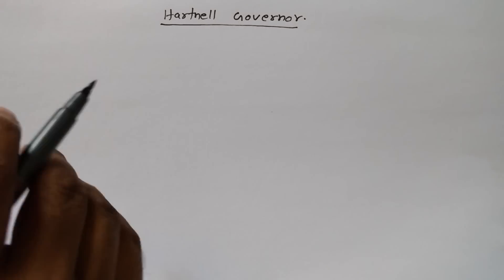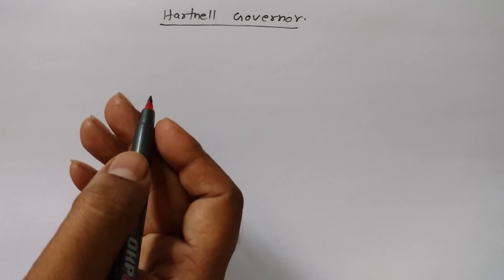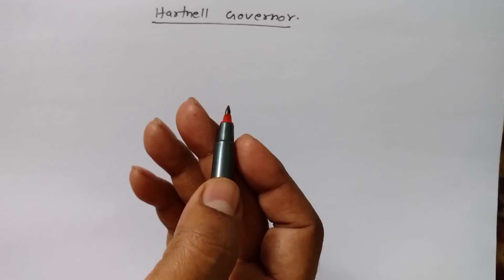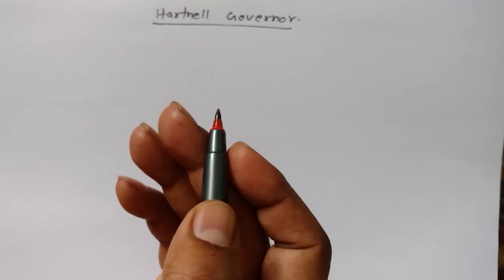Today I'm going to derive the Hartnell Governor. This is one of the most important governors, also known as a centrifugal governor as well as a spring-loaded governor. If you've read about types of governors or watched my videos related to governors, I've already shared a couple of derivations and basic concepts. Today I'm going to share how to derive the Hartnell Governor quite easily.